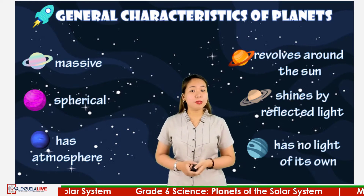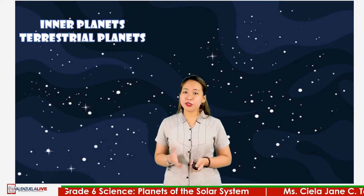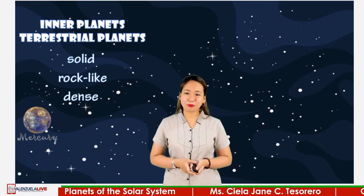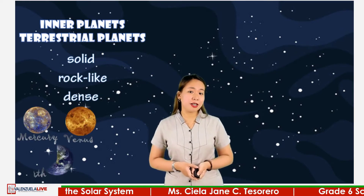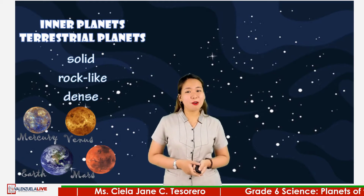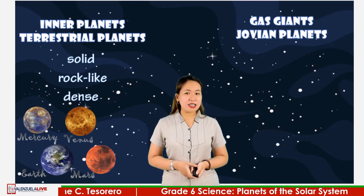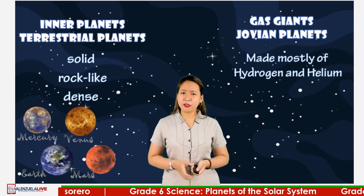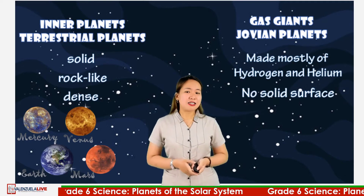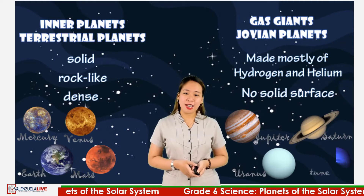Major planets in our Solar System can be classified into two. The inner planets, also known as the terrestrial planets, because they are solid, rock-like, and dense. The planets considered as terrestrial planets are Mercury, Venus, Earth, and Mars. The second classification is the gaseous or Jovian planets. These planets are made almost entirely of hydrogen and helium and do not have solid surfaces. The Jovian planets are Jupiter, Saturn, Uranus, and Neptune.